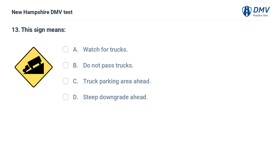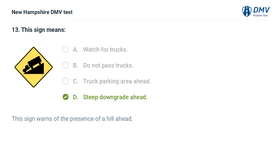This sign means: A) watch for trucks, B) do not pass trucks, C) truck parking area ahead, D) steep downgrade ahead. The answer is D, steep downgrade ahead. This sign warns of the presence of a hill ahead.